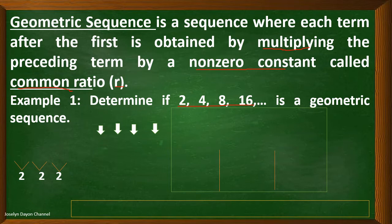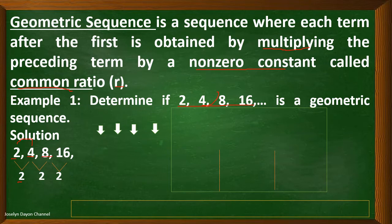So, how to get the ratio? Let's consider the example 2, 4, 8, 16. We have here a term, 4, divided by the preceding term. So, 4 divided by 2, the answer is 2. 8 divided by 4, the answer is also 2. So, here is what we call the common ratio.